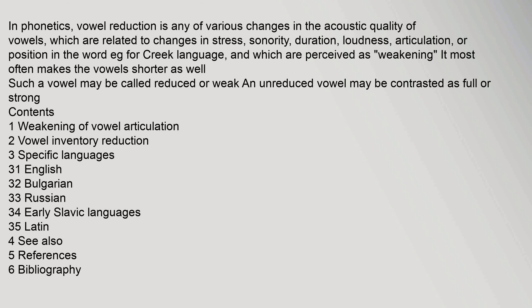In phonetics, vowel reduction is any of various changes in the acoustic quality of vowels, which are related to changes in stress, sonority, duration, loudness, articulation, or position in the word — e.g. for the Creek language — and which are perceived as weakening. It most often makes vowels shorter; such a vowel may be called reduced or weak, while an unreduced vowel may be contrasted as full or strong.